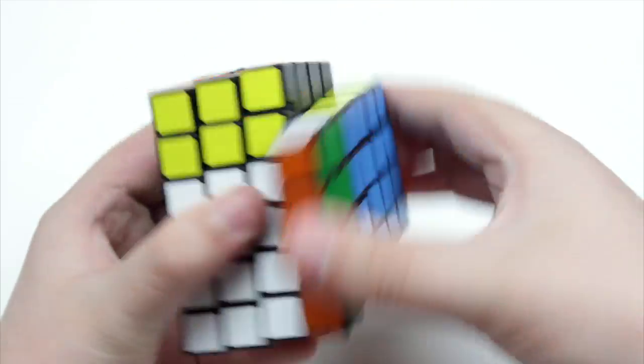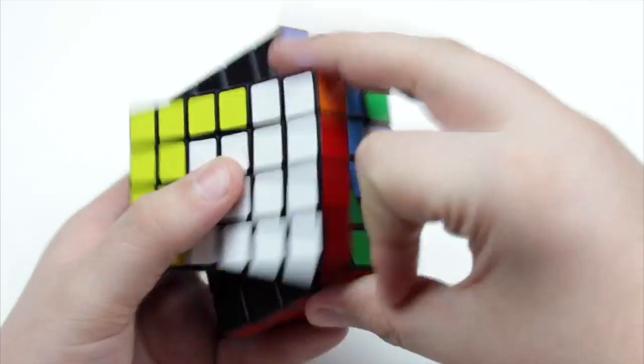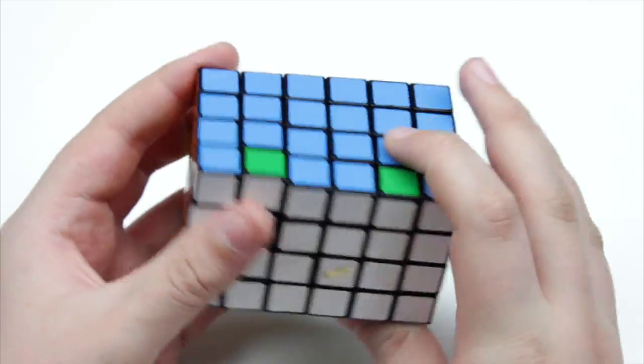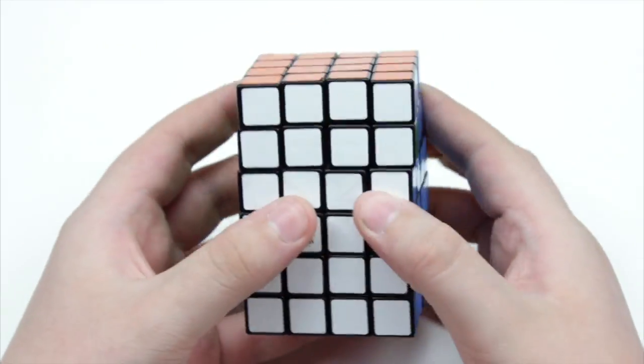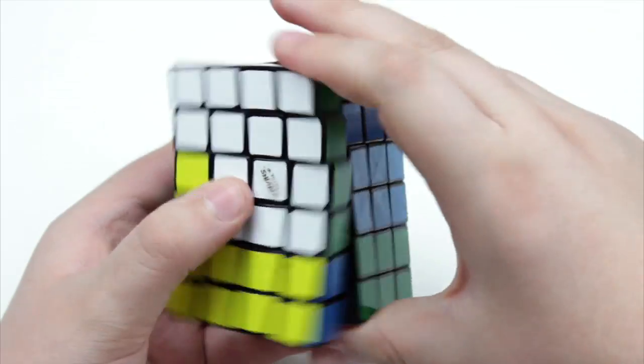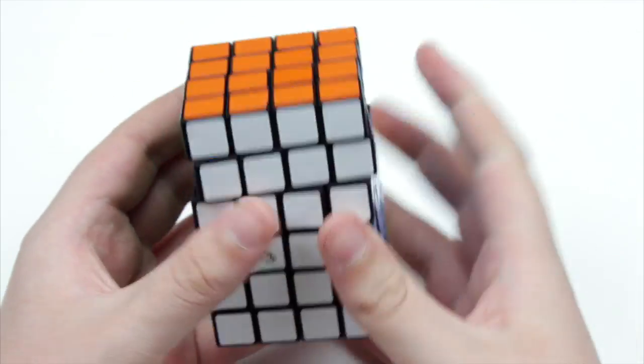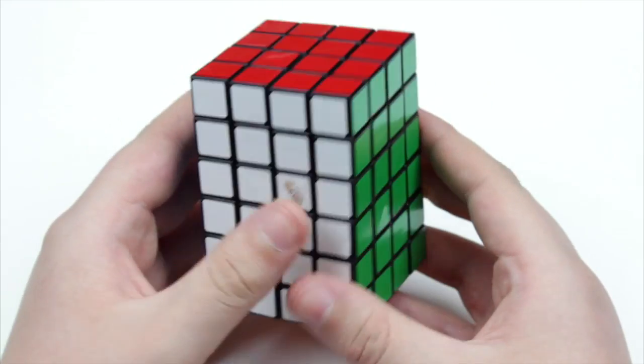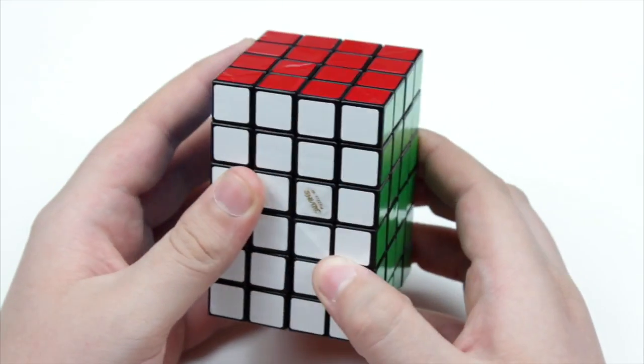Now there is another parity issue you can get. It looks like this. And you basically just solve this one exactly like you solved the other ones. So small u, R2, F2, small u, U2, F2, R2, small u2. Just like that. So that's really about all there is to it for solving the 4x4x6.